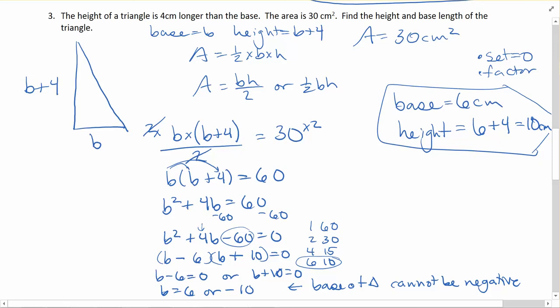So again, be careful to clarify that it cannot be the negative answer in this case because it wouldn't make any sense to have a triangle with negative width or base. And just be careful when you're plugging in that you're recalling all the previous knowledge and information that you've got for the area of a triangle as well.